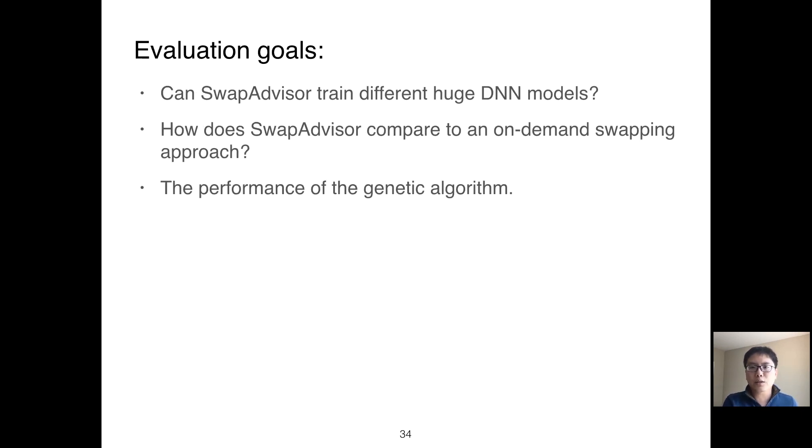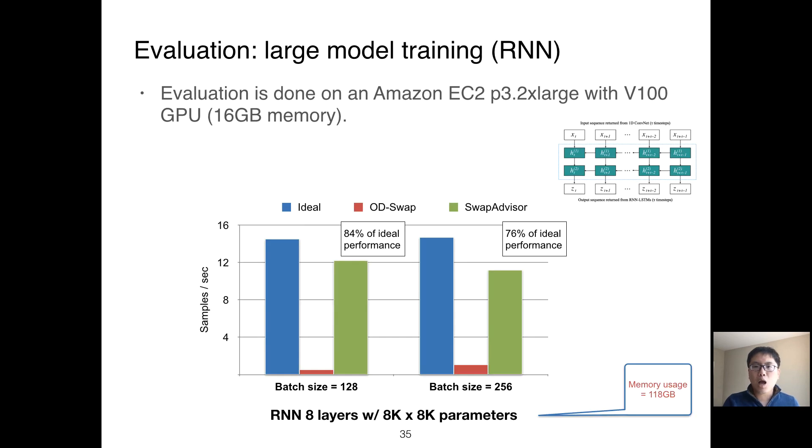In the evaluation, we would like to see if SwapAdvisor can actually train different huge DNN models and how SwapAdvisor performs. We compare SwapAdvisor to an on-demand swapping which decides what tensor to swap based on an LRU algorithm. Finally, we would like to evaluate the search performance of the genetic algorithm. Our evaluation was run on a V100 GPU with 16GB memory. The ideal is a synthetic baseline with infinite GPU memory. The y-axis of the figure is the training throughput; higher is better.